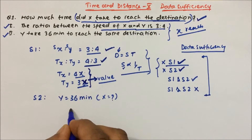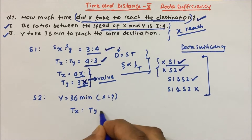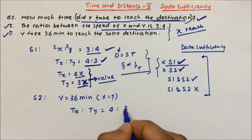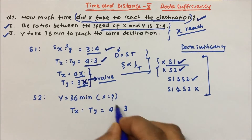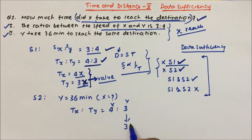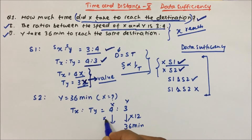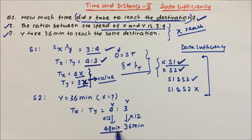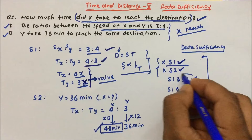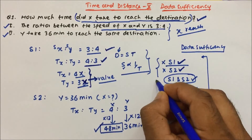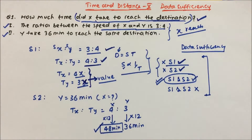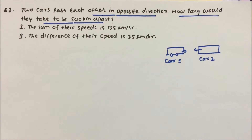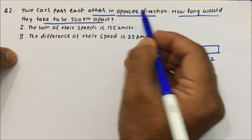Now we combine Statement 1 and Statement 2. The time ratio of x to y is 4:3. Y is taking 36 minutes, which equals 3 times 12. So x will also take 12 times 4, giving x = 48 minutes. Therefore, x takes 48 minutes to reach the destination. The answer is that both Statement 1 and Statement 2 together are sufficient.